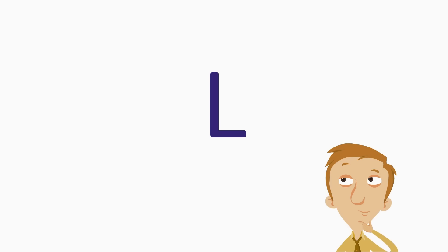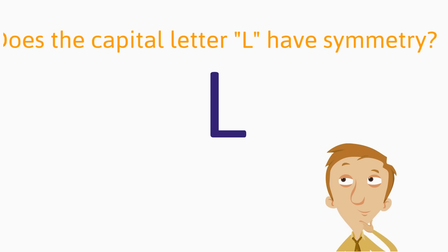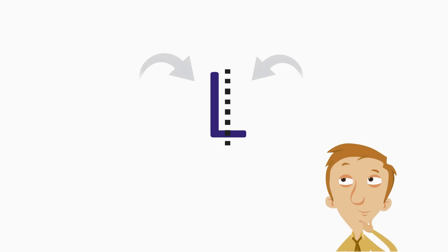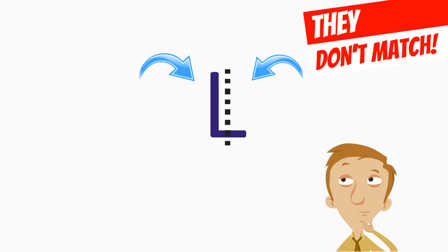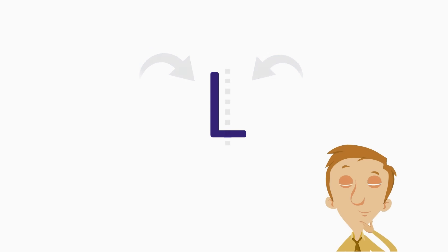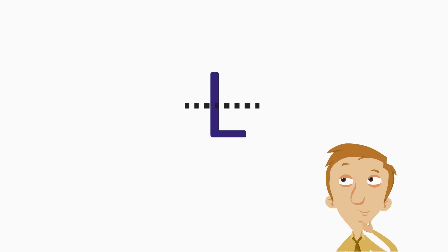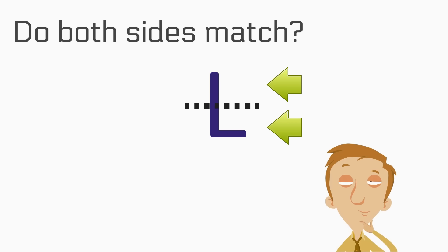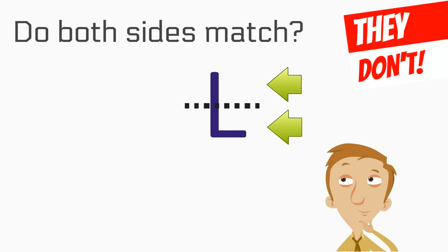Let's try the letter L. Does the capital letter L have symmetry? Let's check with a vertical line first, then we can look at both sides. They don't match — this is not a line of symmetry. Let's check with a horizontal line. Do both sides match? They don't.